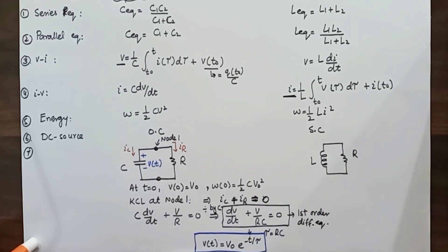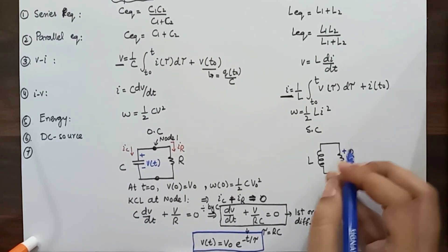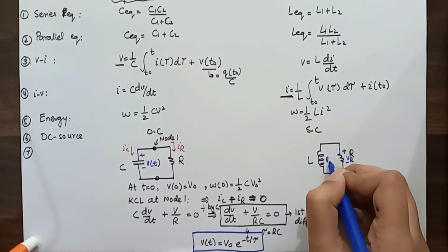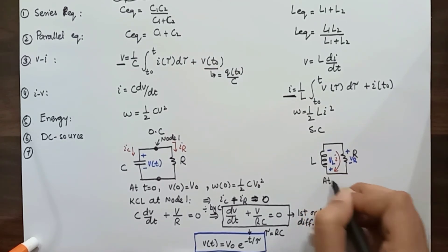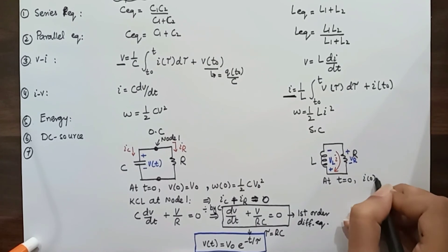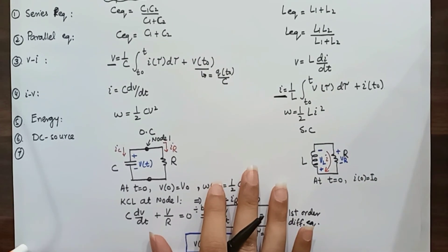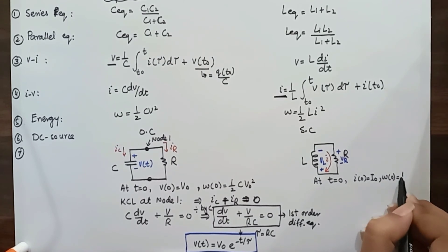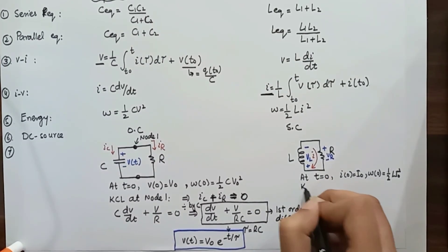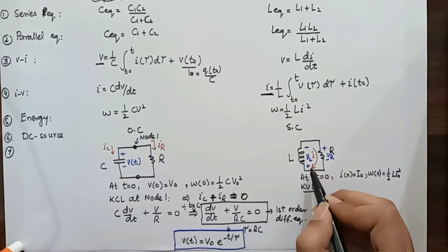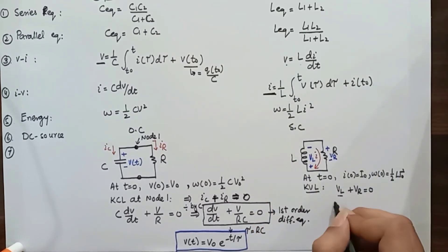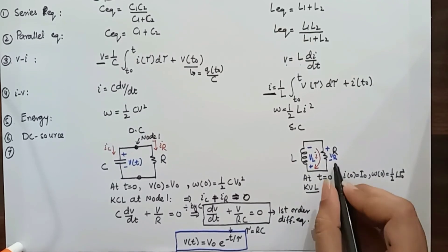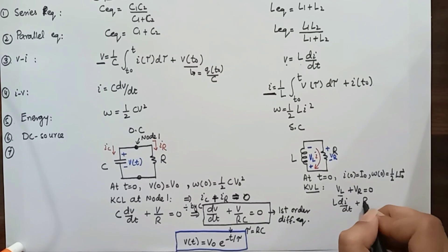Similarly, consider a series combination of an inductor and a resistor. Let the voltage across the resistor be vR and across the inductor be vL, and define a direction for current. At time t = 0, i(0) = I₀ and the energy stored in the inductor is (1/2) × L × I₀². Applying KVL around the loop: vL + vR = 0, which gives L × di/dt + R × i = 0 by Ohm's law.